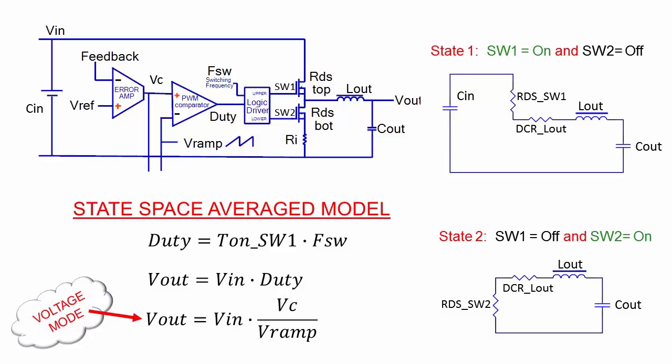The output voltage is controlled by the duty cycle, representing percentage of the time that switch one is on. With voltage mode control, the duty cycle is set by comparing the error amplifier output VC with a fixed sawtooth ramp. The open loop output impedance is represented as a low impedance voltage source in series with the output inductor.